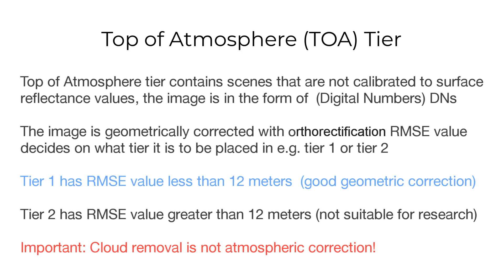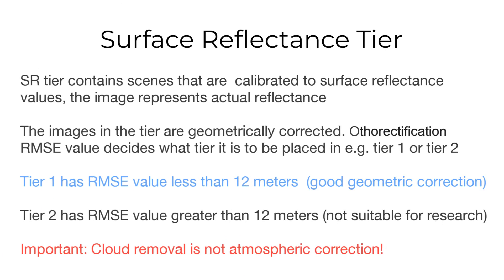Please watch my video on image calibration in Google Earth Engine. The surface reflectance tier contains scenes that are calibrated to surface reflectance values. Unlike the TOA tier, images in the SR tier are geometrically corrected and the orthorectification RMSE value decides what tier they are placed in, for example tier 1 or tier 2.